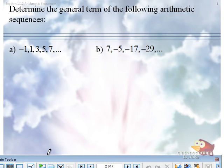So in part a here, what's our first term? Negative one. What's our common difference? What number do we keep adding to get the next term? Two.